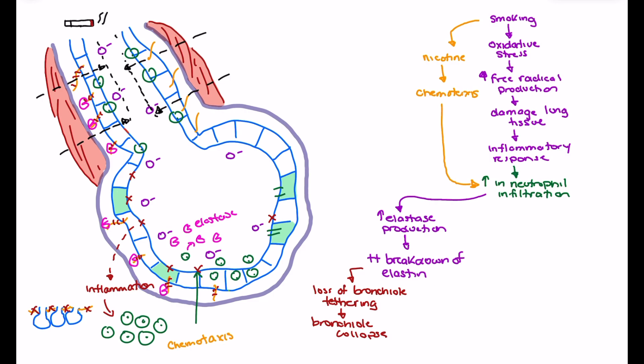The other issue with a breakdown of elastin is that elastin gives our alveoli their recoil ability — picture an elastic band, where the elastin allows it to recoil back into shape. When we have a breakdown of elastin in the alveoli we lose alveolar recoil, and the alveoli become flimsy and can become hyperinflated. They'll take in a lot of air but won't be able to get much air out because they've lost that recoil, similar to a balloon inflated too many times.